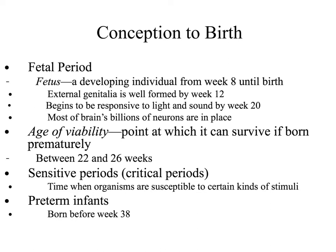Another important aspect is the age of viability — basically the point at which the organism can survive if born prematurely. We find this typically occurs between the 22nd and 26th week. Anyone born before that is not known to have survived, and anyone born within this period or thereafter has increasing chances of survival the closer we get to full term.